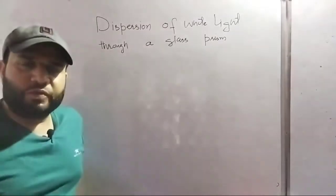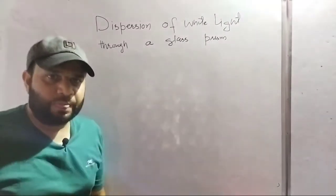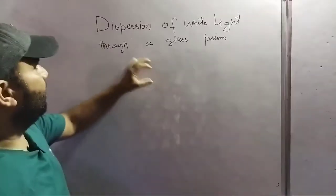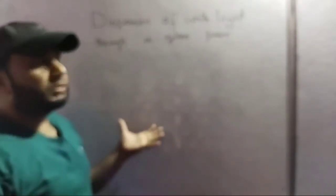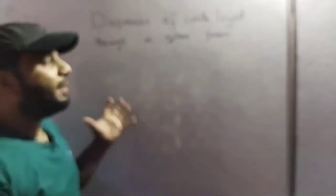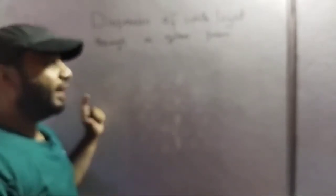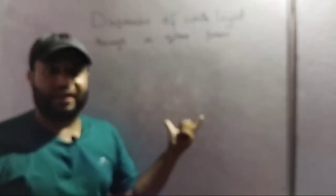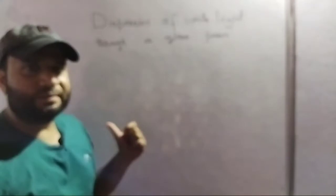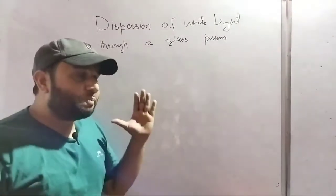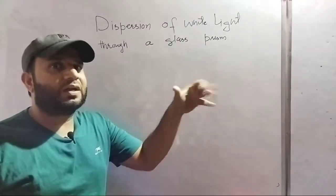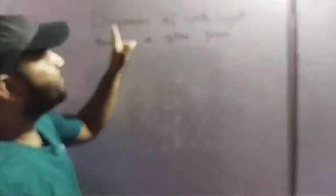Assalamualaikum and very good evening to all of you. You are watching Shahid Sir's Physics Class. Today's topic is dispersion of white light through a glass prism. Iska matlab hai ki agar hum white light ko incident karenge glass prism pe, to us light se kya hoga — it will split into its constituent colors. So this splitting of white light into its constituent colors is called dispersion.